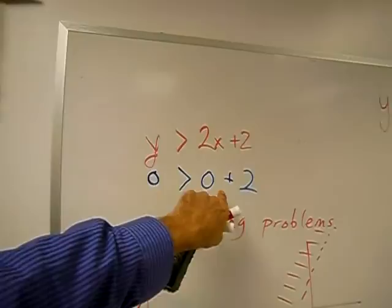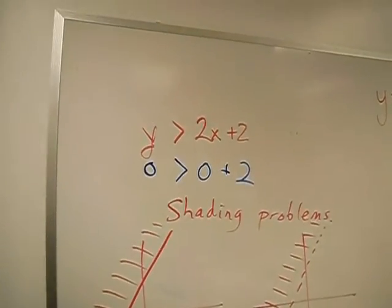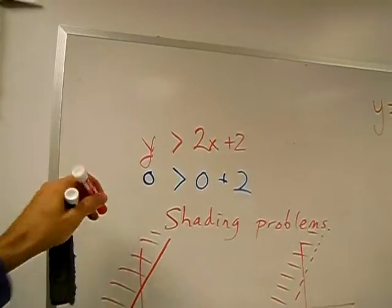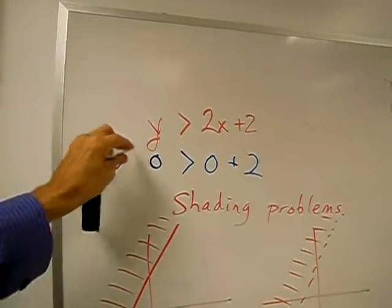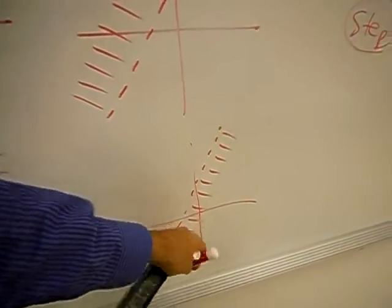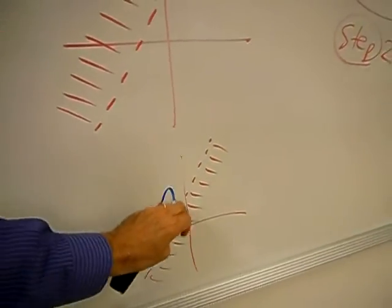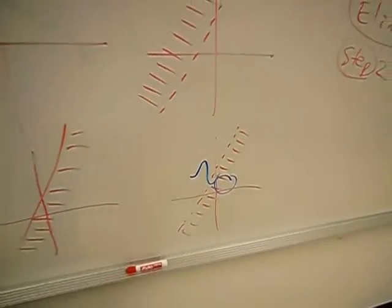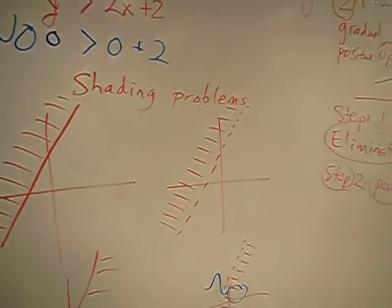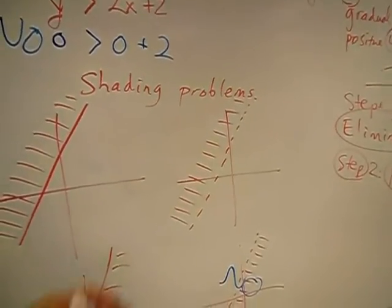Zero is greater than zero plus 2? That doesn't look too good. So if (0,0) is included, we have to say no on that one. Oh my, we just found the answer. Okay, so that's how we do that.